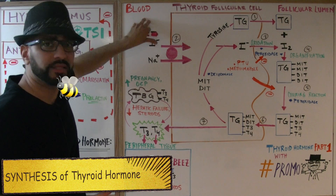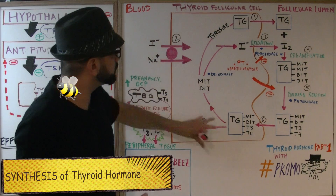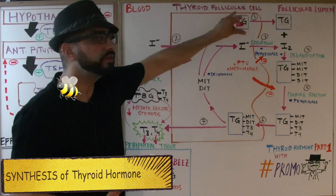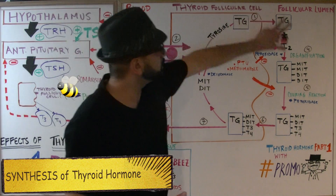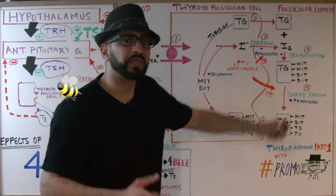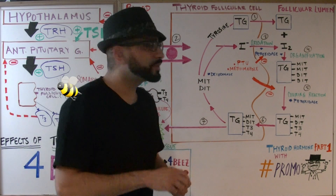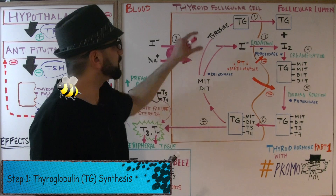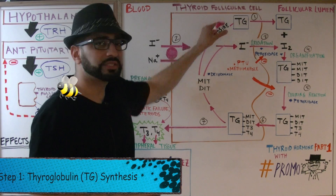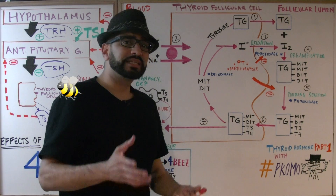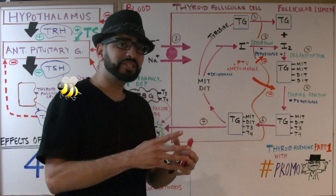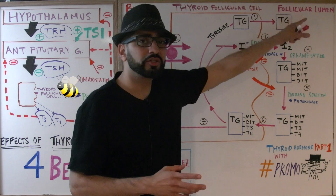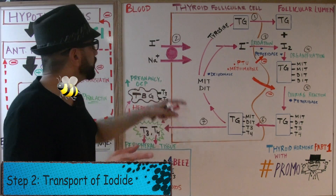Let's start off with the synthesis. In red is the blood; this box-looking figure is the thyroid follicular cell, and this area over here is the follicular lumen. Step 1: thyroglobulin (TG) is synthesized by tyrosine. Thyroglobulin is then packed into a vesicle and secreted into the follicular lumen.